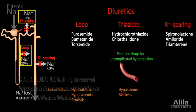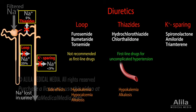The two classes produce similar side effects, but the side effects are more severe with loop diuretics. Potassium-sparing diuretics act mainly in the collecting duct and have only a mild diuretic effect, but they can compensate for the potassium loss induced by other diuretics and are therefore commonly used in conjunction with thiazide or loop diuretics.